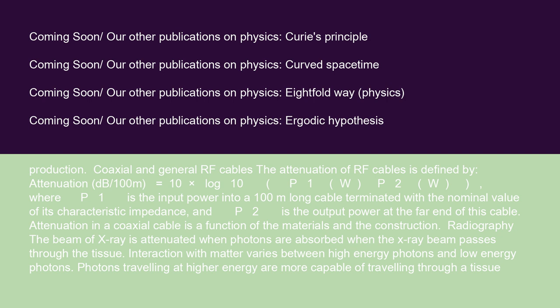For coaxial and general RF cables, attenuation is defined by: Attenuation (dB/100m) = 10 × log10(P1/P2), where P1 is the input power into a 100 m long cable terminated with the nominal value of its characteristic impedance, and P2 is the output power at the far end of the cable. Attenuation in a coaxial cable is a function of the materials and the construction.